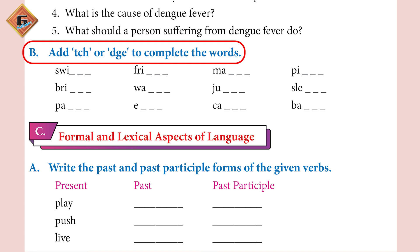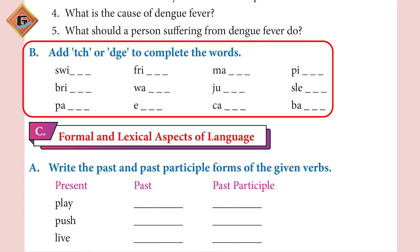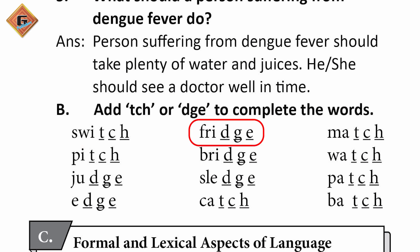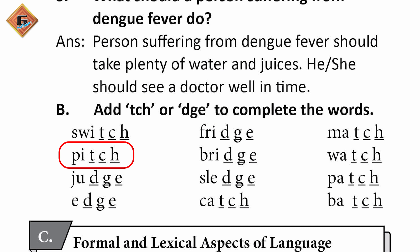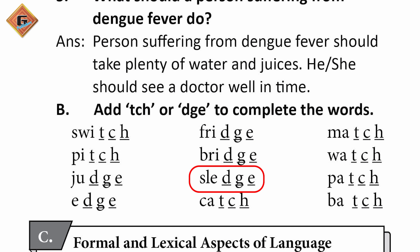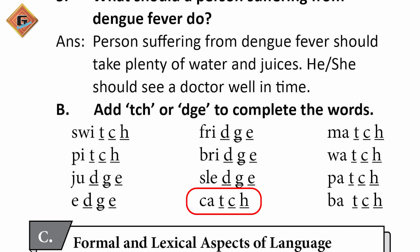Part B: Add TCH or DGE to complete the following words. Switch — S-W-I-T-C-H. Fridge — F-R-I-D-G-E. Match — M-A-T-C-H. Pitch — P-I-T-C-H. Bridge — B-R-I-D-G-E. Watch — W-A-T-C-H. Judge — J-U-D-G-E. Sledge — S-L-E-D-G-E. Patch — P-A-T-C-H. Edge — E-D-G-E. Catch — C-A-T-C-H. Batch — B-A-T-C-H.